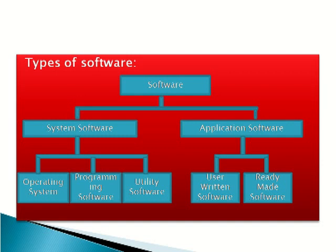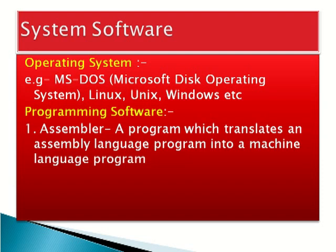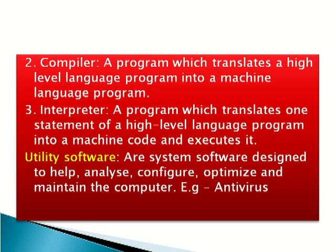Types of software — please refer the chart for details. Operating system is a type of system software. Programming software includes: assembler, compiler, and interpreter. Assembler is a program which translates an assembly language program into a machine language program. Compiler is a program which translates a high-level language program into a machine language program. Interpreter is a program which translates one statement of a high-level language program into machine code and executes it. Utility software is system software designed to help, analyze, configure, optimize, and maintain the computer.